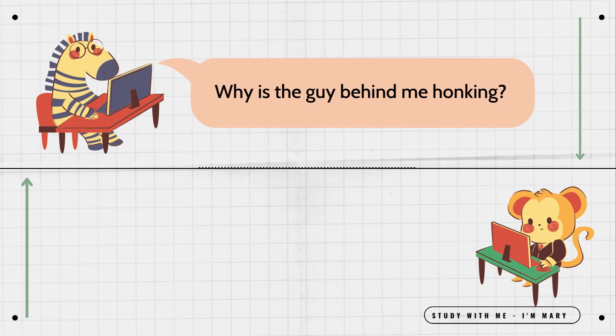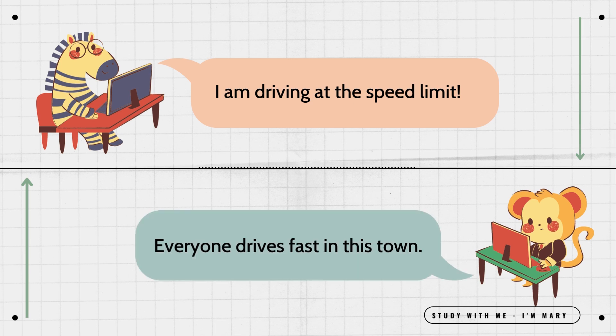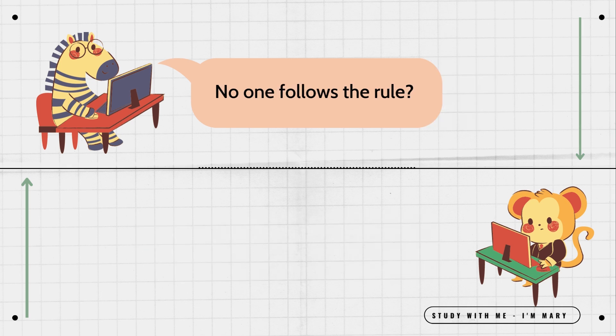Why is the guy behind me honking? You are going too slow. I am driving at the speed limit. Everyone drives fast in this town. No one follows the rule. You're the only one.